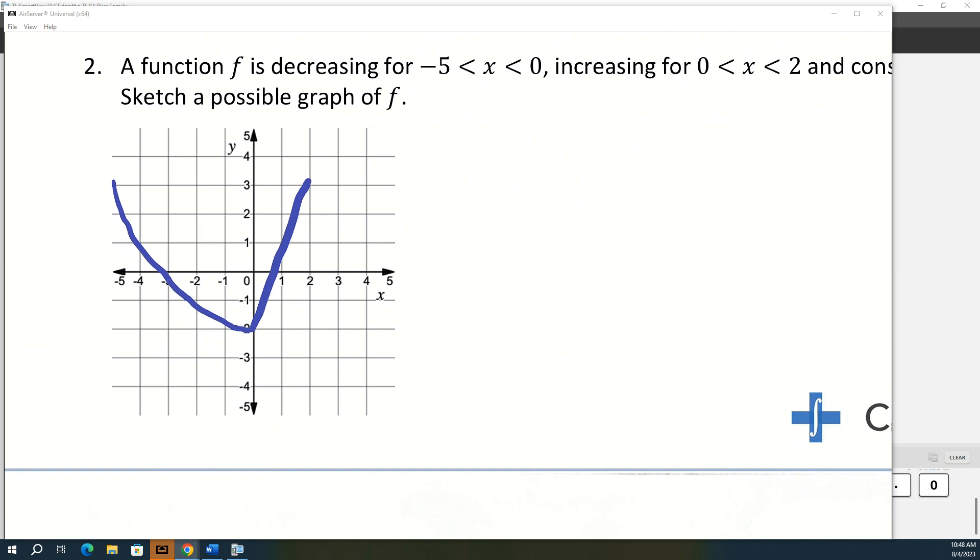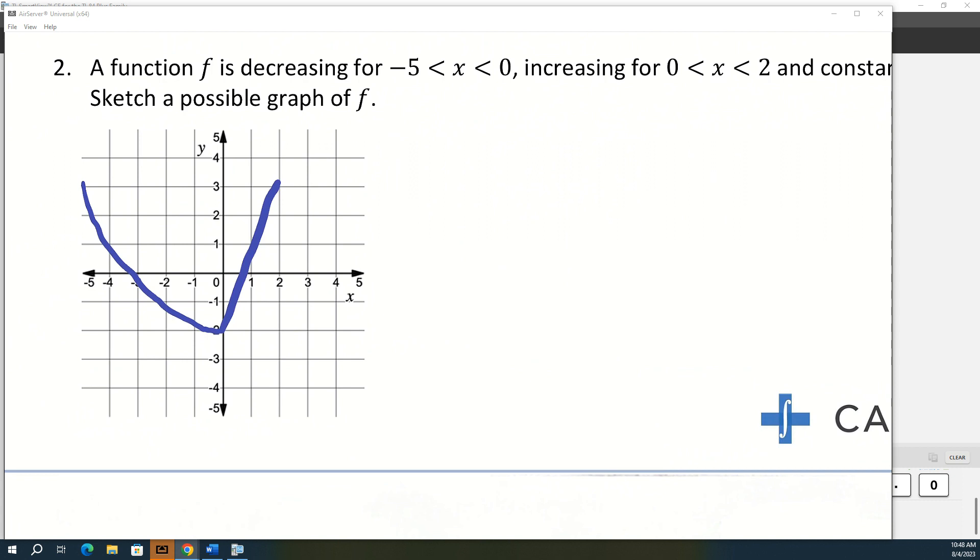And then everywhere greater than two, we are going to have a constant horizontal line. So wherever you stopped. Now I said wherever you stopped. These actually don't have to be connected. So you can have like a piecewise function with three separate segments if you want to. They don't have to be connected.